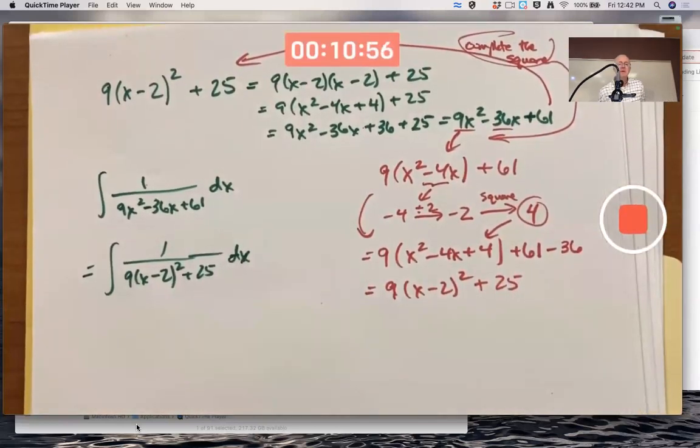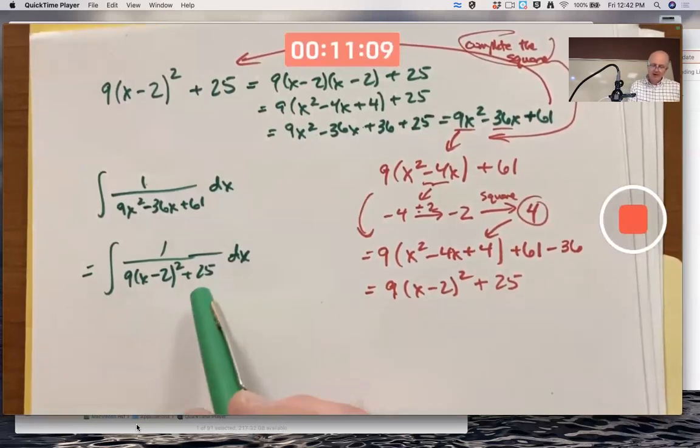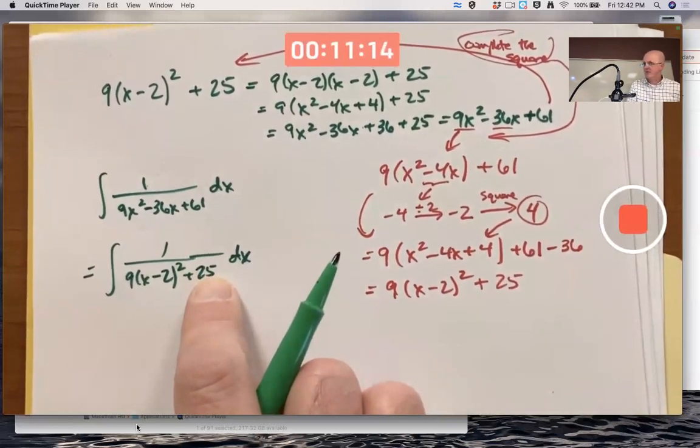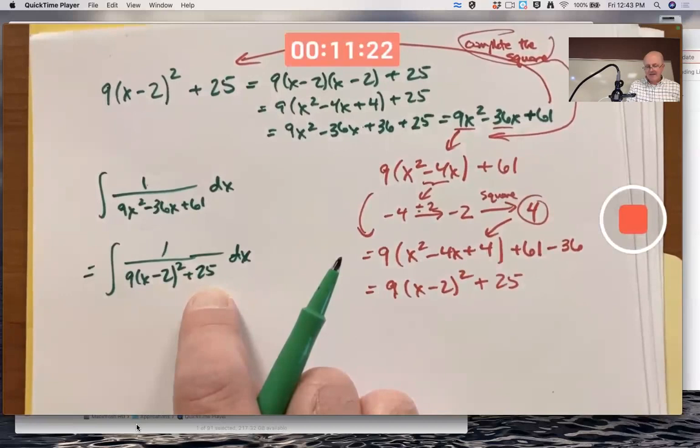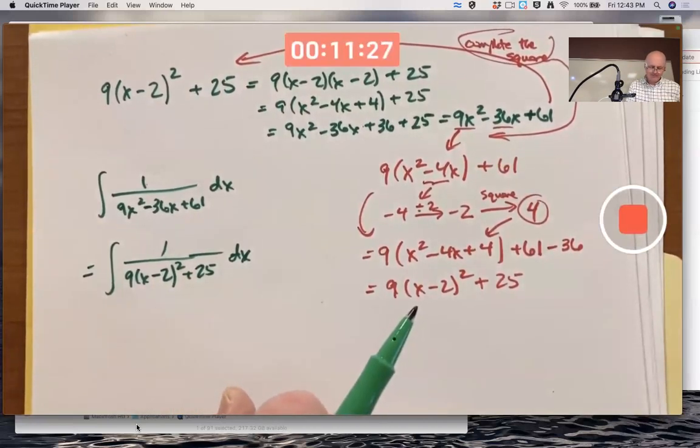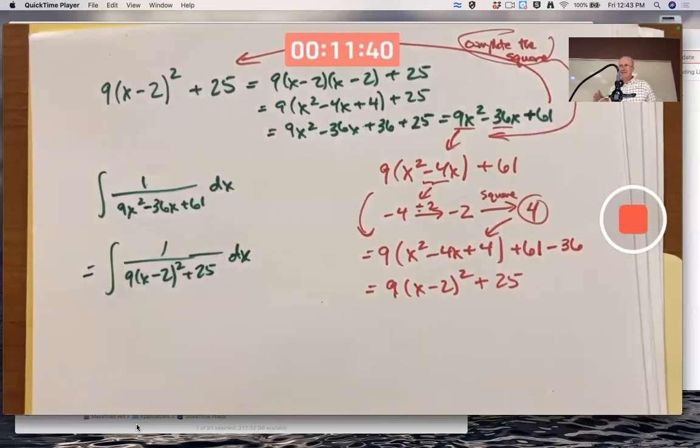So what this means is this integral equals this integral. Now, the quickest way to do this integral is with a plain old substitution. You'd want to ultimately let w equal 3/5 times (x - 2). I'm not going to show you the details, even though that's probably the simpler way to go, because I want a little bit more practice with trig substitution.